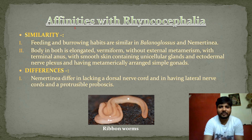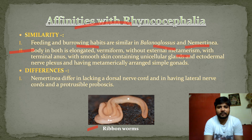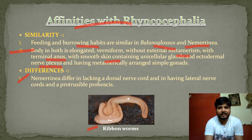Next are the affinities with Rhynchocephalia, or Nemertea. The similarities between Balanoglossus and Nemertea are: feeding and burrowing habits are similar; the body in both is elongated and vermiform — for example the ribbon worm, a member of Nemertea, has a worm-like shape. Both lack external metamerism, have terminal mouth, smooth skin with unicellular glands, ectodermal nerve plexus, and metamerically arranged simple gonads. The difference is that Nemertea lacks a dorsal nerve cord and has a lateral nerve cord and a protrusible proboscis.